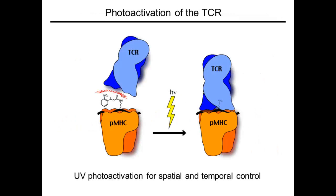We study this process using a photoactivation approach that gives us enhanced spatiotemporal control. MTOC reorientation is triggered by engagement of the T-cell receptor, or TCR, by cognate peptide major histocompatibility complex, peptide MHC, on the surface of the APC. We have developed photoactivatable peptide MHC reagents that only activate the 5CC7 or OT1 TCRs after irradiation with UV light.